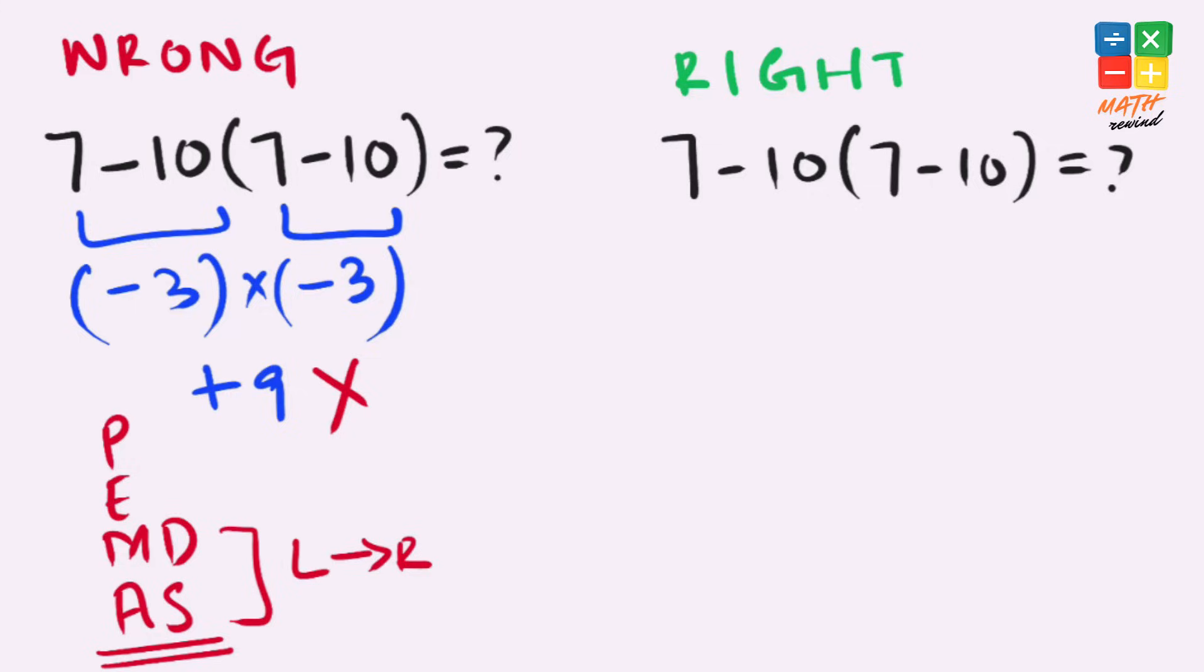Now let's rewind and solve this problem the right way. If you notice, in this expression we have parenthesis present and parenthesis takes highest priority according to the order of operations. So we'll solve what we have inside parenthesis. 7 minus 10 gives us negative 3.